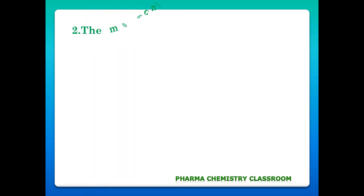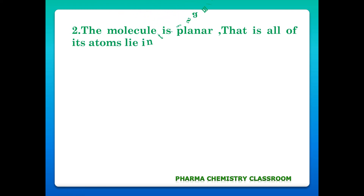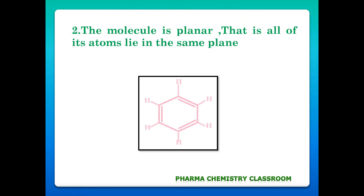Second criteria: the molecule is planar in nature, meaning all of its atoms lie in the same plane. The example given is benzene.